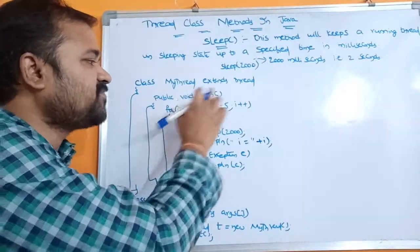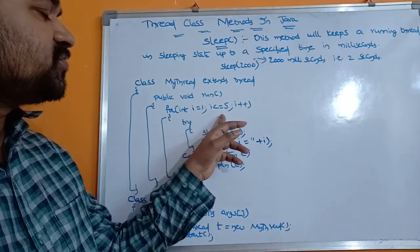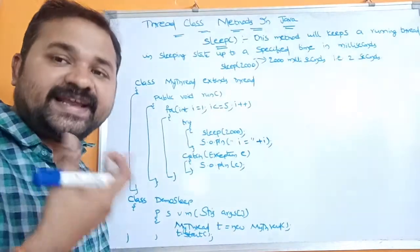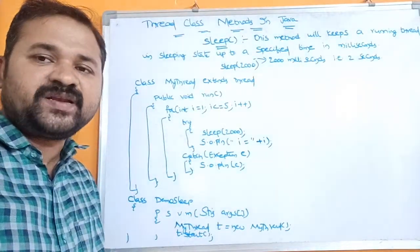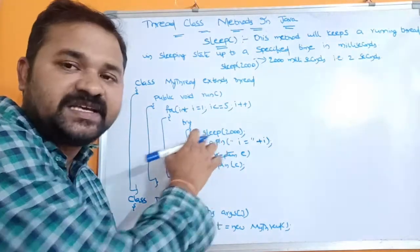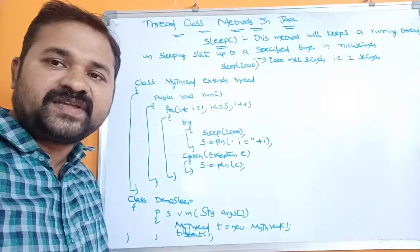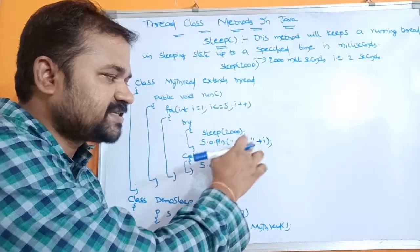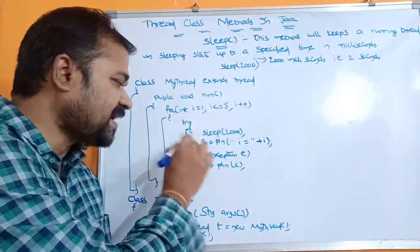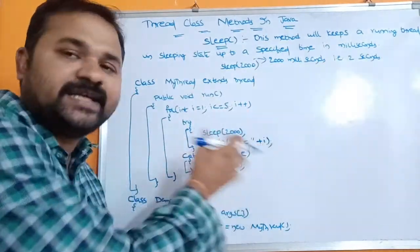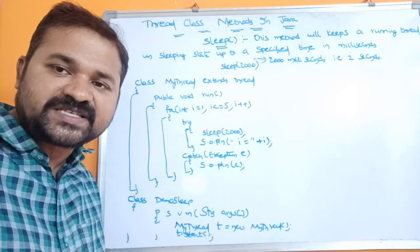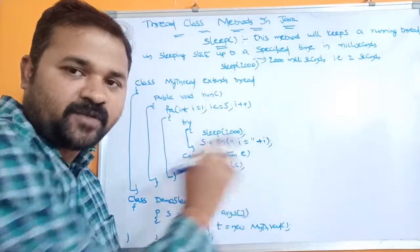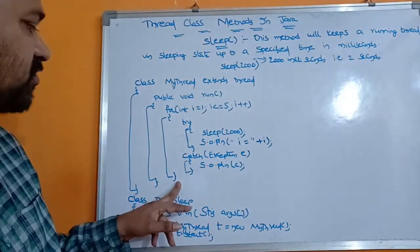To provide a definition for MyThread, we define the run method with the prototype public void run. Inside the for loop — for int i = 1; i <= 5; i++ — since sleep throws an exception, we handle it by placing the code in a try-catch block. sleep(2000) is a static method called without an object. System.out.println prints i. The catch block handles and displays any exception.